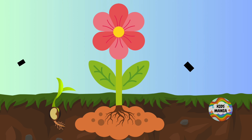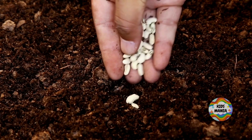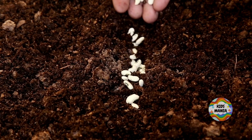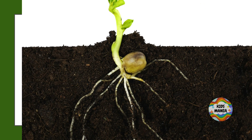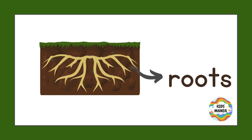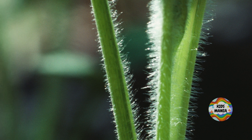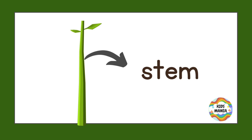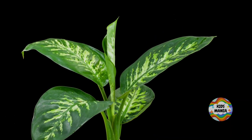In this picture you can see under the soil — what do you see? This part of the plant is a seed. It's a seed under the soil. Now you can see the roots coming out from the seed. These are roots under the soil.